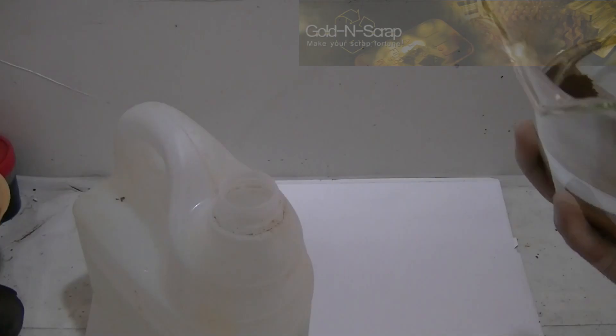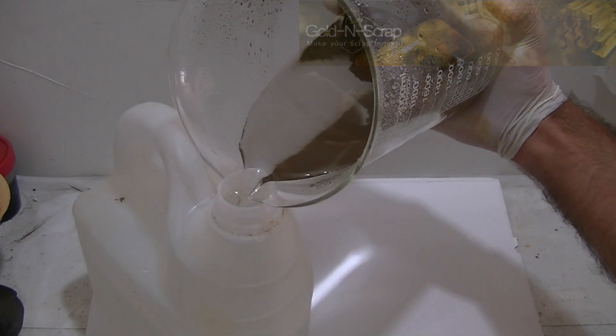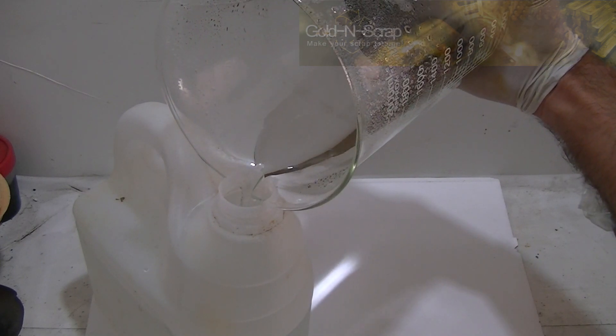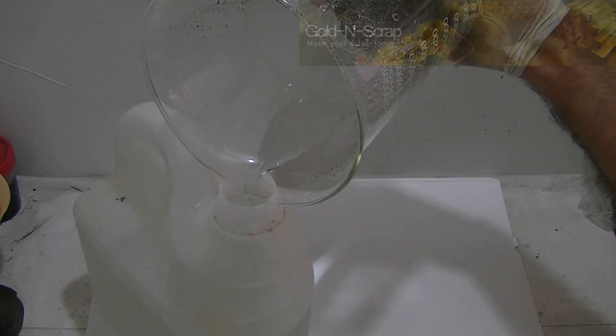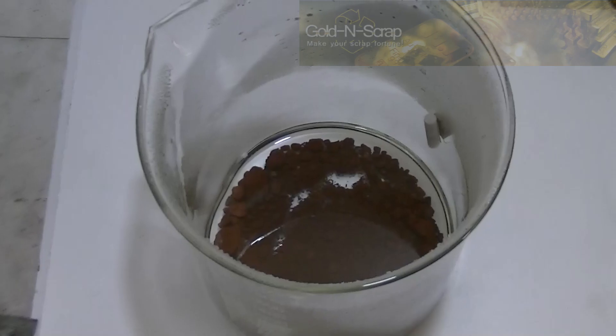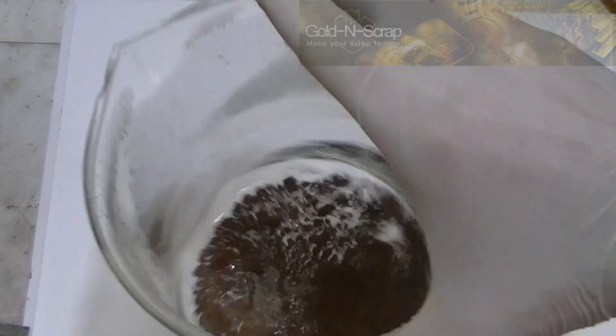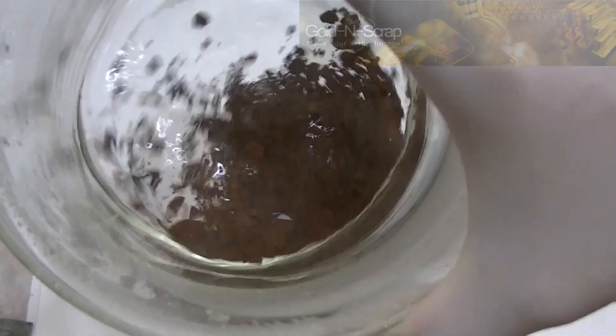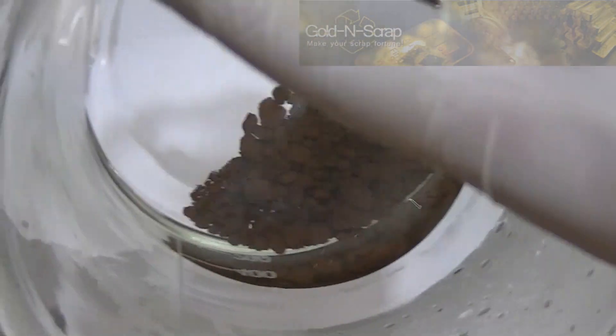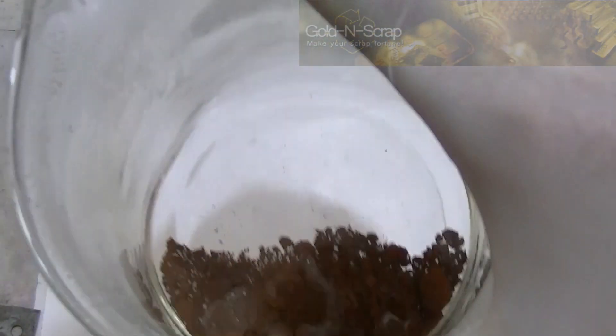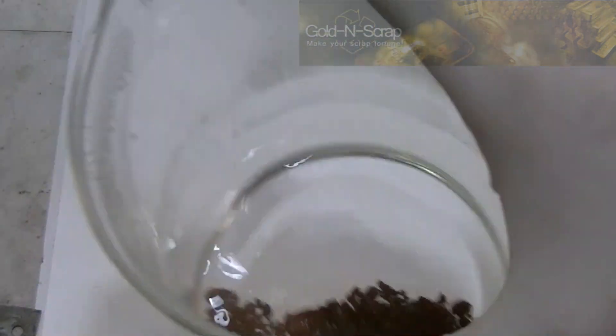The bulk of the solution is slowly decanted and the washing cycles begin. The washing cycles are extremely important if commercially pure gold is wanted. Starting with a simple tap water wash. The gold powder is covered with boiling hot water, swirled for a while and left to cool back down. This water wash is repeated two more times.